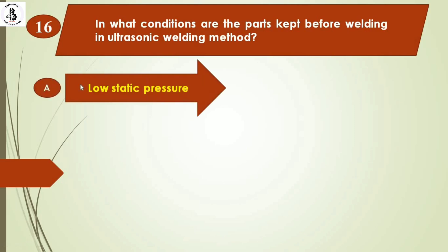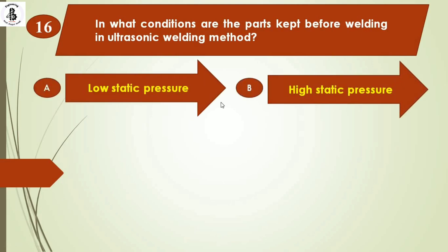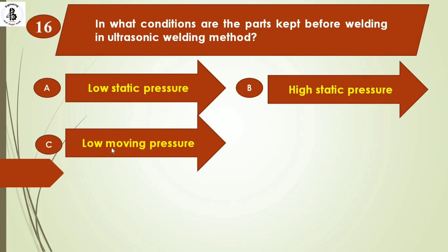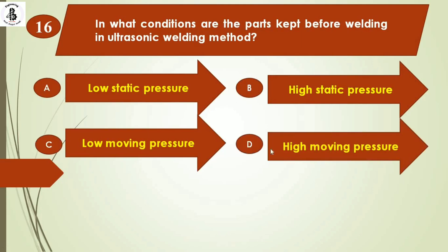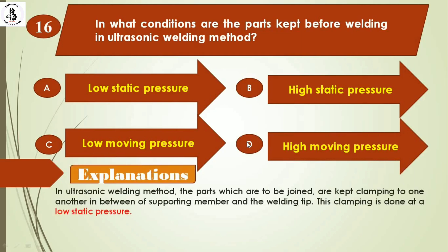Next question: in what conditions are parts kept before welding in ultrasonic welding? Option A: low static pressure. Option B: high static pressure. Option C: low moving pressure. Option D: high moving pressure. In ultrasonic welding, parts to be joined are clamped between supporting members and the welding tip at low static pressure so as not to damage the workpiece surface. Right answer is option A.